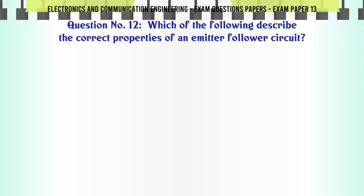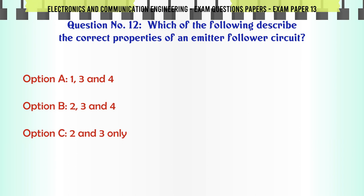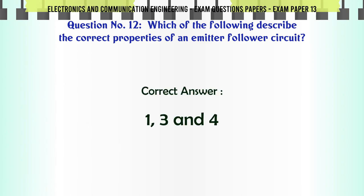Which of the following describe the correct properties of an emitter follower circuit? A: 1, 3, and 4, B: 2, 3, and 4, C: 2 and 3 only, D: 2 and 4 only. The correct answer is 1, 3, and 4.